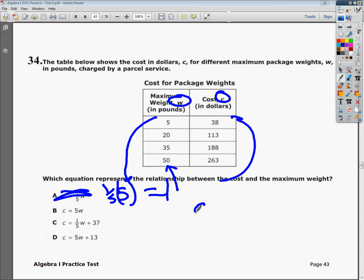Same thing with the second one. If I plug in five times the first number is five, well that's 25. It's supposed to be 38, so I know B is not the right answer.